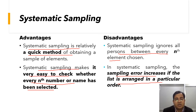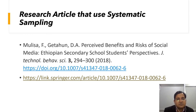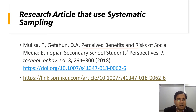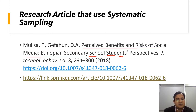There is one article that uses systematic sampling. If you are interested, you can find the article on the perceived benefits and risks of social media among secondary school students. This research uses systematic sampling. The full article is available, and you can click the link to access it.